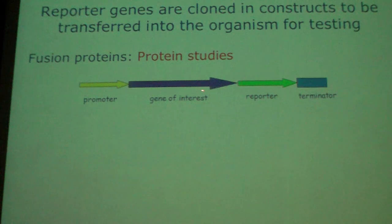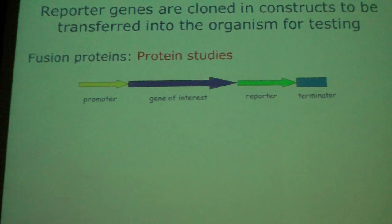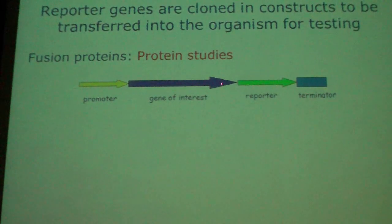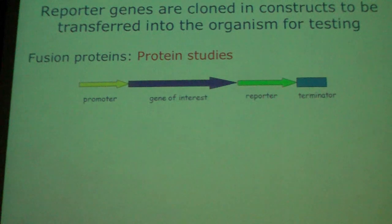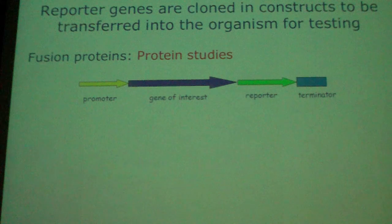You can solve this by making fusion proteins — then you can do protein studies. You have the promoter, the gene of interest, and you put the reporter gene in a translational fusion behind it. A translational fusion means the whole open reading frame is translated into one single protein. To do this, you remove the stop codon of the gene of interest, and instead use the ATG start codon of the reporter directly, producing one single protein with the reporter gene tagged onto it.